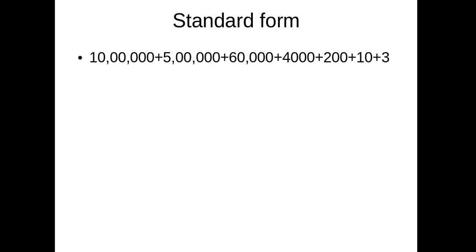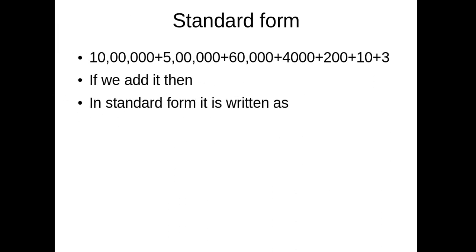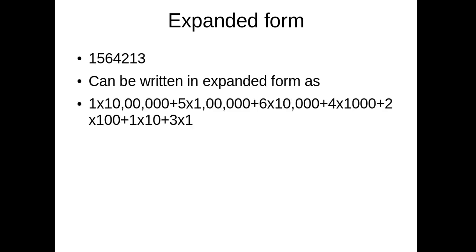Now we are going to learn about standard form. For example: 10 lakhs + 5 lakhs + 60,000 + 4,000 + 200 + 10 + 3 — if we add it, then in standard form it is written as 15,64,213. Then, let us learn expanded form. 15,64,123 can be expanded and written as 1 × 10 lakh + 5 × 1 lakh + 6 × 10,000 + 4 × 1,000 + 2 × 100 + 1 × 10 + 3 × 1.